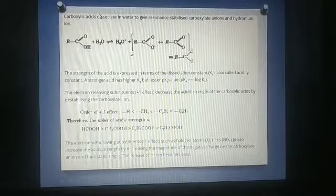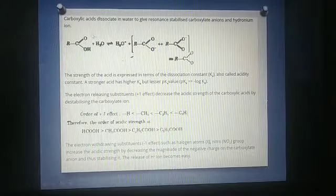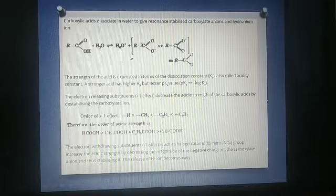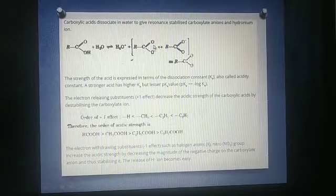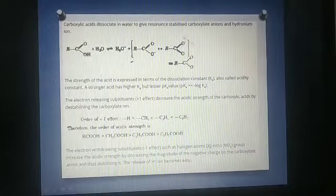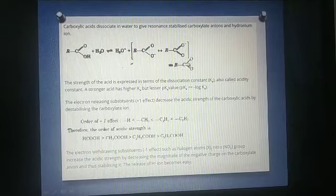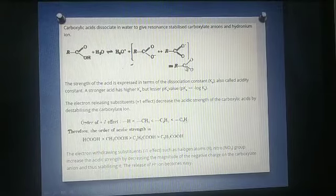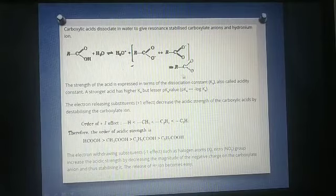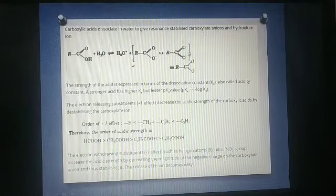Carboxylic acids dissociate in water to give resonance stabilized carboxylate anions and hydronium ions. On reaction with water, it gives H3O plus and RCOO minus. And this is carboxylate anion, which undergoes resonance. These are the resonating structure and this is the hybrid, resonance hybrid. Both these bonds are equivalent and shows partial double bond character.